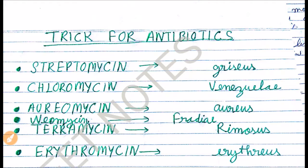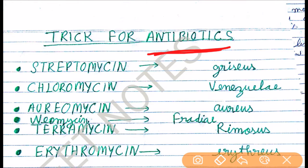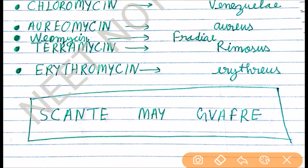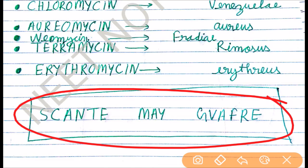Hello everyone, welcome to my channel NeatNotes. Today in this video I will explain a symbol to remember antibiotics and their sources. The trick is very simple — you just need to remember this sentence: 'Scanty May Gap Free.' We need only two words: scanty and gap free.